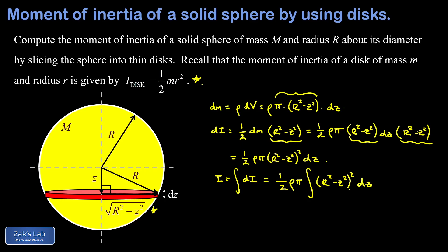And then we have to think what are the limits of integration here. We're starting at the bottom of the sphere where z is equal to negative r and then ending at the top of the sphere where z is equal to r. So our limits of integration are negative r to r.